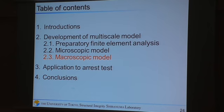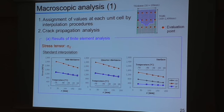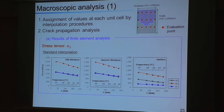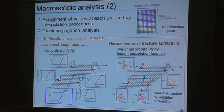Next, the macroscopic model. In the third stage, the procedure consists of two parts. The first part is the assignment of properties at each unit cell by interpolation procedures, and then crack propagation analysis. Assignment is performed for tensile stress and coupling parameters. We use standard interpolation for the assignment of tensile stress, and for the coupling parameters, we use interpolation of cumulative probability distribution and weighted probability by a linear interpolation function.